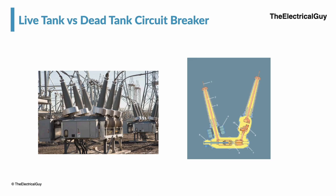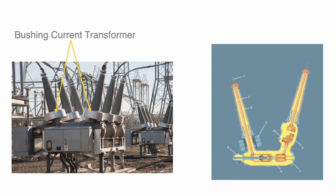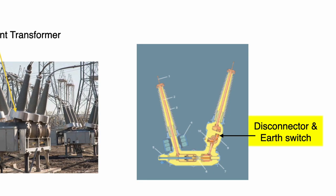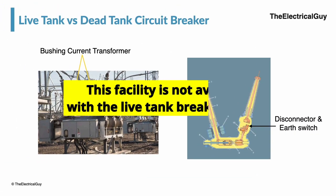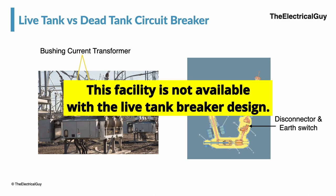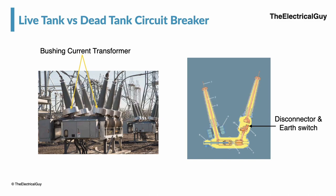The design of the dead tank circuit breaker allows a current transformer to be installed inside the bushing — called a bushing current transformer — and it can be installed in both line and load side bushings. Additionally, a disconnector and earth switch can be combined along with the dead tank circuit breaker, as seen on screen. This facility is not available with the live tank breaker design; you need separate current transformers and a separate disconnector and earth switch.